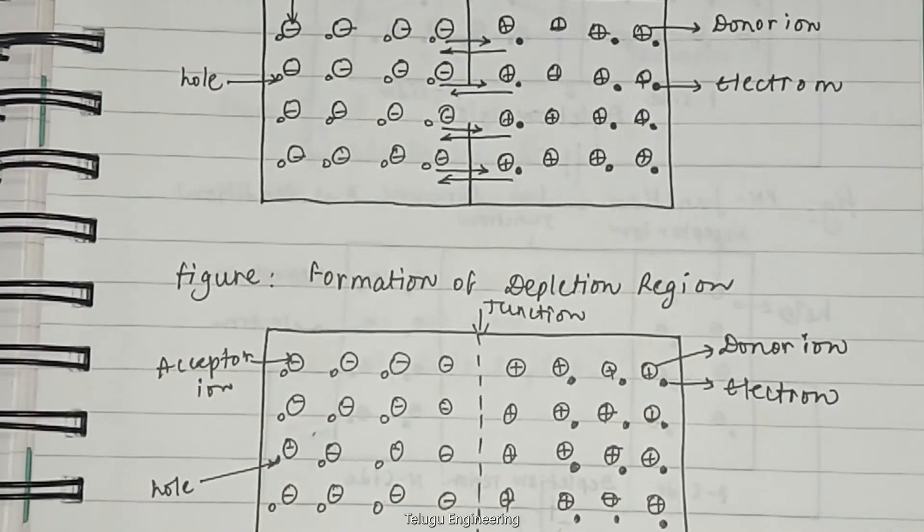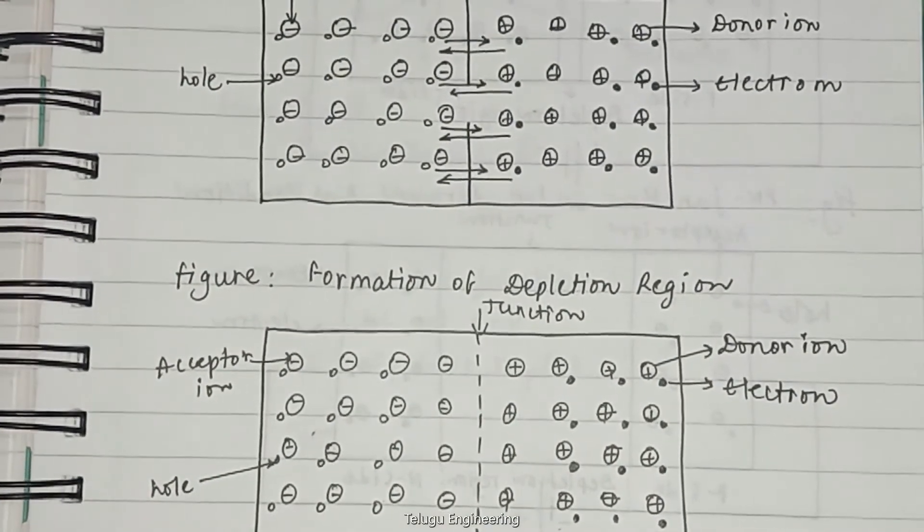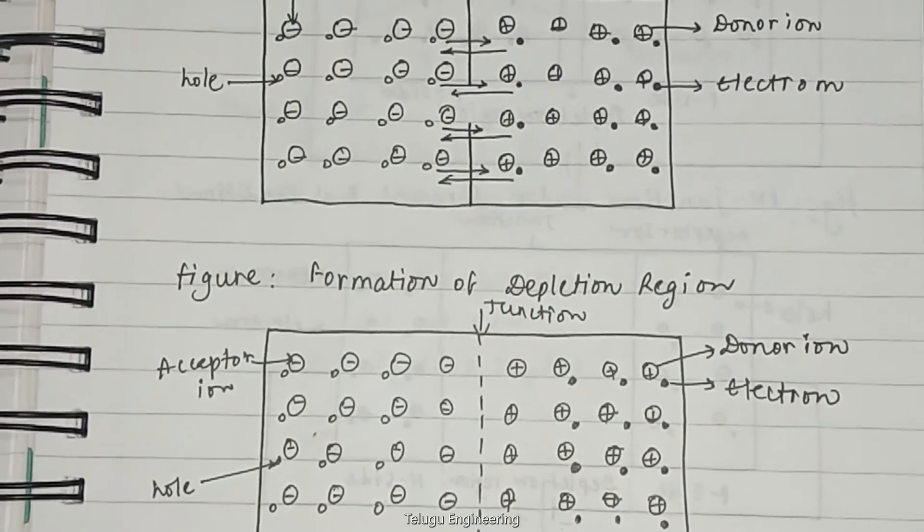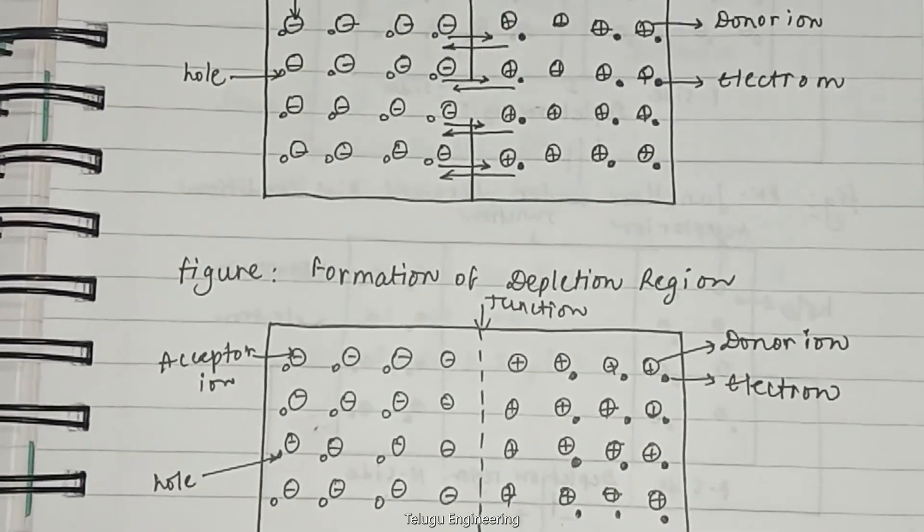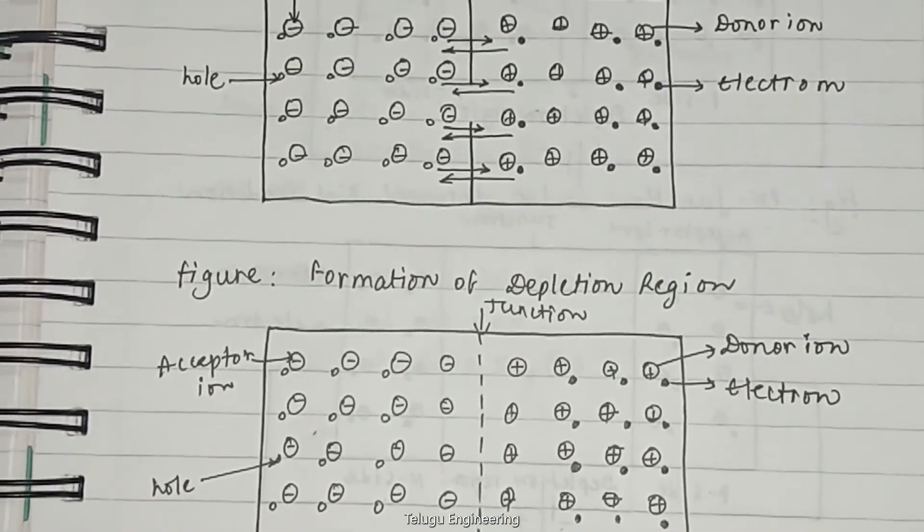The mobile charges form a negatively charged layer on the P side and a positively charged layer on the N side.